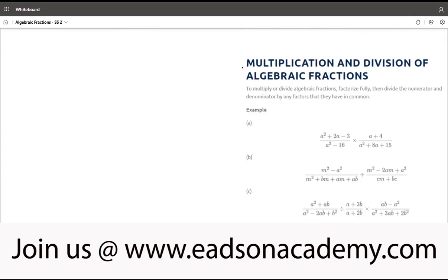This is m square minus a square over m square plus bm plus am plus ab divided by m square minus 2am plus a square over cm plus bc.